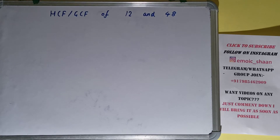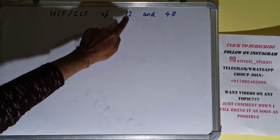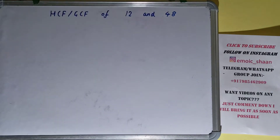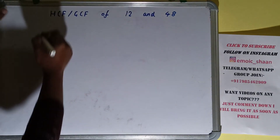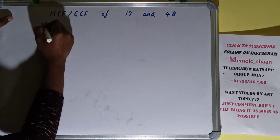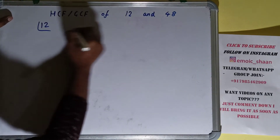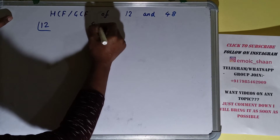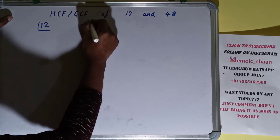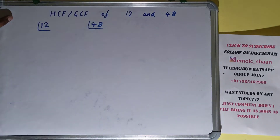Hello friends, and in this video I'll be helping you with the HCF or the GCF of the numbers 12 and 48. So let's start. To find it out, we first need to write each of the numbers separately and need to prime factorize each of them.